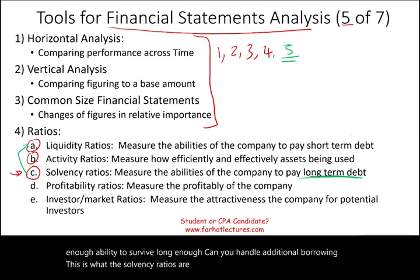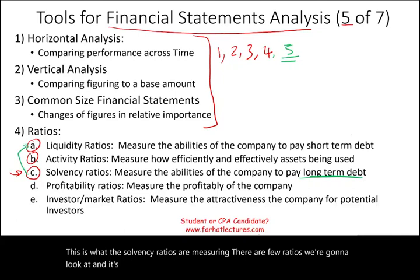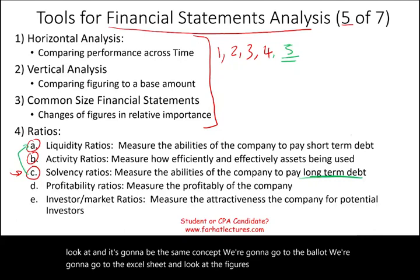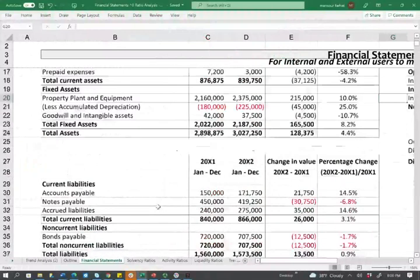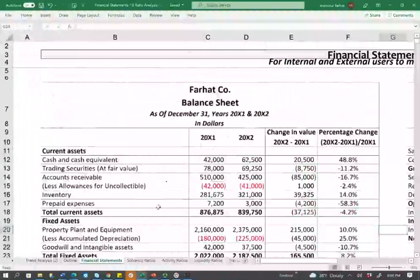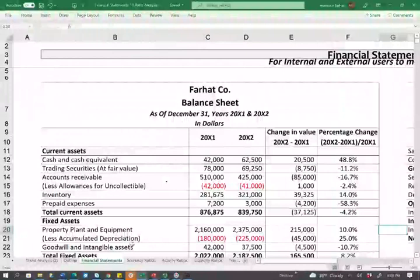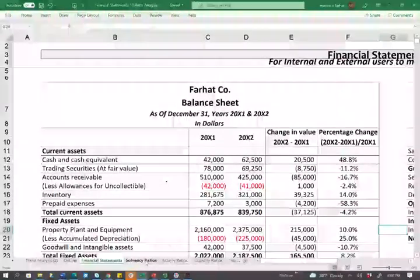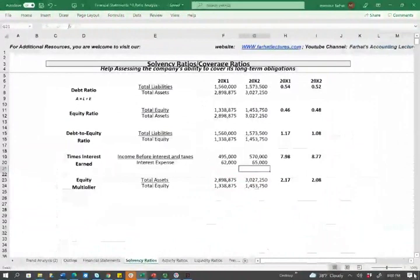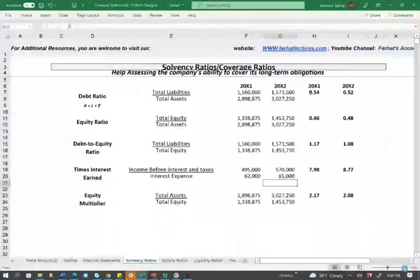There are a few ratios we're going to look at, and it's going to be the same concept. We're going to go to the Excel sheet and look at the figures, compute the numbers, and try to make sense of them. Once again, we are looking at this balance sheet and income statement that can be found on farhatlectures.com.